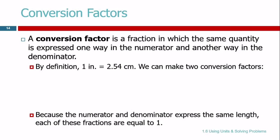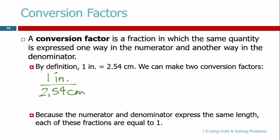By definition, 1 inch is equal to 2.54 centimeters. They describe the same quantity, the same length. 1 inch — about that much — is the same as 2.54 centimeters. Different names for the same thing. So when we write a conversion factor, we take this quantity expressed in inches and put it on the top of our fraction, and we put the same quantity expressed in a different unit on the bottom: 1 inch over 2.54 centimeters.